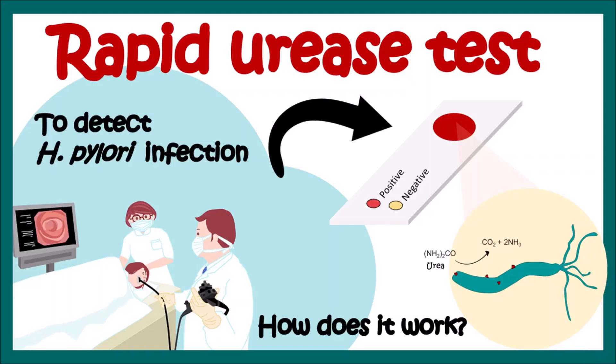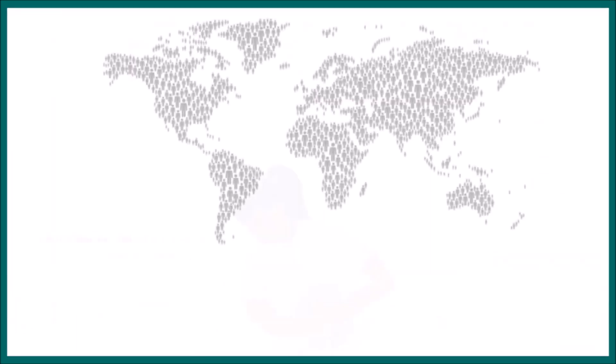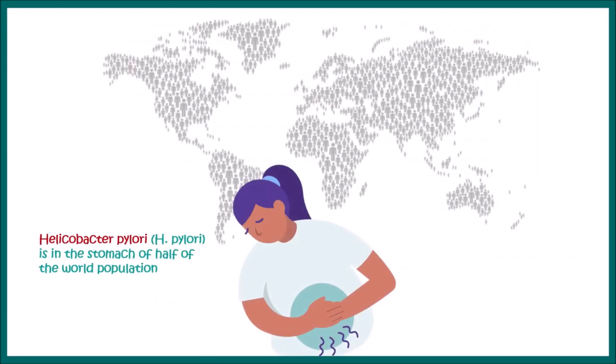In this video, we'll talk about the rapid urease test for detecting Helicobacter pylori in a person's stomach. Half of the world population has Helicobacter pylori in their stomach, and in many cases, it can lead to serious gastric complications.